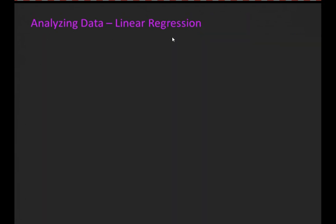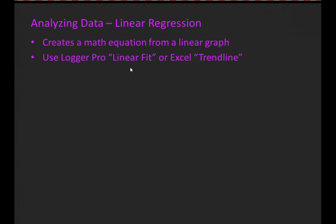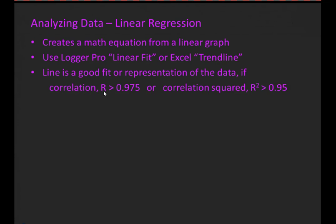Moving on, another tool in analyzing data is linear regression. This will create a math equation from a linear graph, also known as a straight line. We can use LoggerPro's linear fit feature, or on Excel it's the trend line feature, to develop this math equation. It's important to understand what represents a good fit of the data—just because these tools can draw a straight line doesn't mean it's a good representation. If the correlation r is greater than 0.975, or the correlation squared r² is greater than 0.95, then the data is a good fit to the straight line.